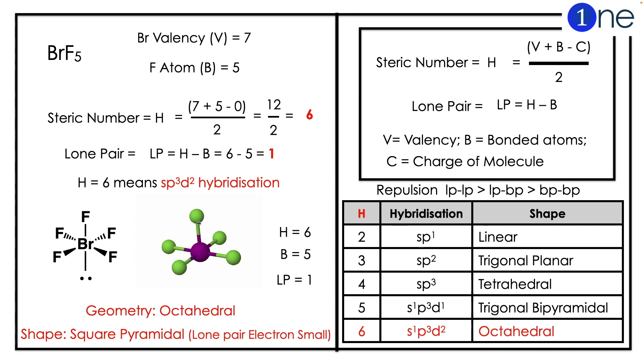Steric number H = 6 means sp³d² hybridization. One lone pair means octahedral with one lone pair. If you draw it, you will see square pyramidal as the structure. The geometry is octahedral, and the shape is square pyramidal.